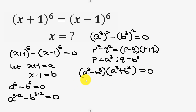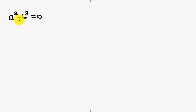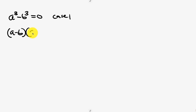So we have two cases here. Case 1: a³ − b³ = 0, and Case 2: a³ + b³ = 0. We're going to solve this case by case. Case 1 is an expression in difference of two cubes, which can be written as (a − b)(a² + ab + b²) = 0.